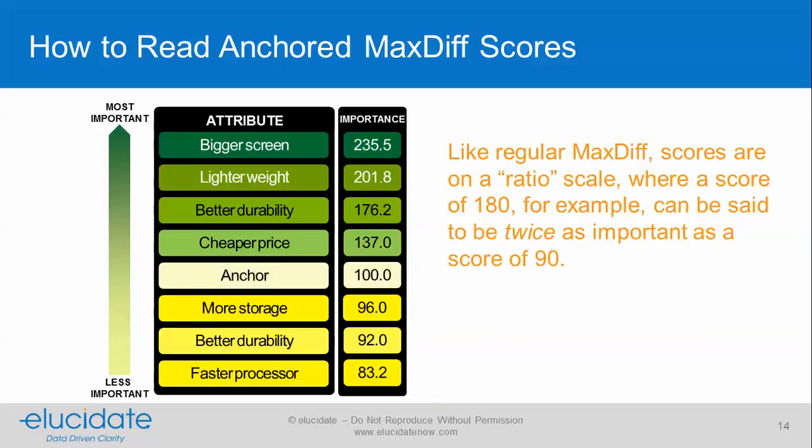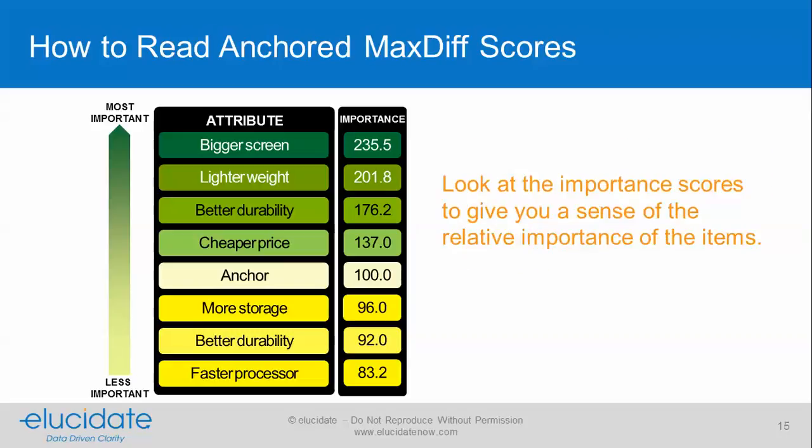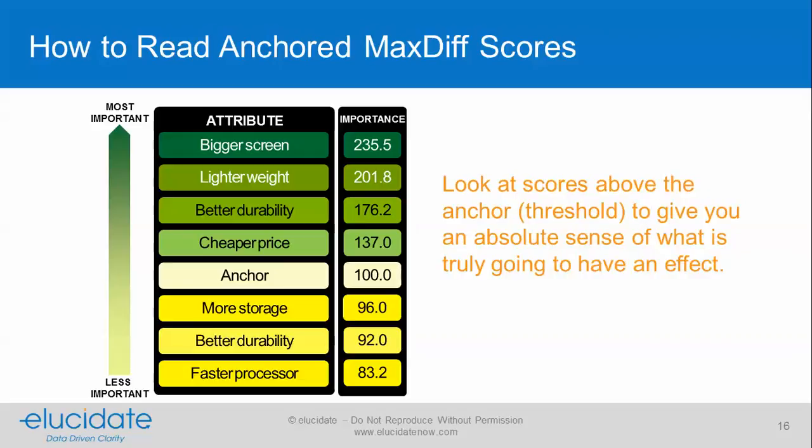Like regular MaxDiff scores, they're on a ratio scale — we can say that a score of 180 is twice as important as a score of 90. We look at these scores to give you a sense of the relative importance of items, but we also look at the scores that fall above the anchor, that threshold, to give you an absolute sense of what's truly going to have an effect.